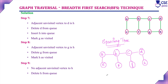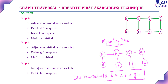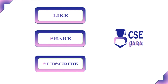The traversal output is A, B, E, C, F, D, G, H. This is the BFS traversal output for this given graph. In BFS traversal technique, it searches breadth-wise, finding unvisited vertices and visiting them first. This is the procedure to implement breadth first search. Thank you for watching this video.